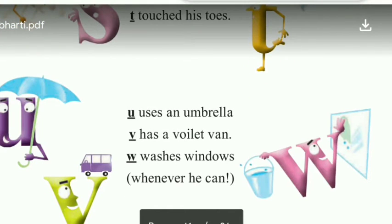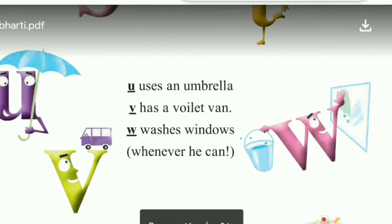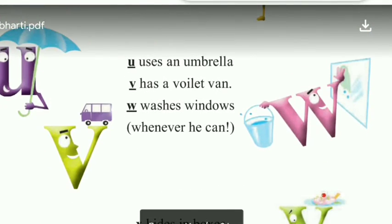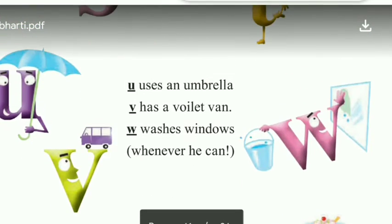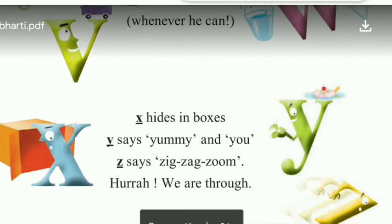U uses an umbrella. Letter U umbrella ka istemaal kar raha hai. V has a violet van. Letter V ke paas kya hai, violet van hai. W washes windows whenever he can. Letter W kya kar raha hai, window ko wash kar raha hai. Jab bhi is ko time milta hai, wo window wash kar raha hai, window ko saaf kar raha hai. X hides in boxes. Letter X kya kar raha hai, box ke andar chup ja raha hai. Hide ka matlab hota hai chupna.